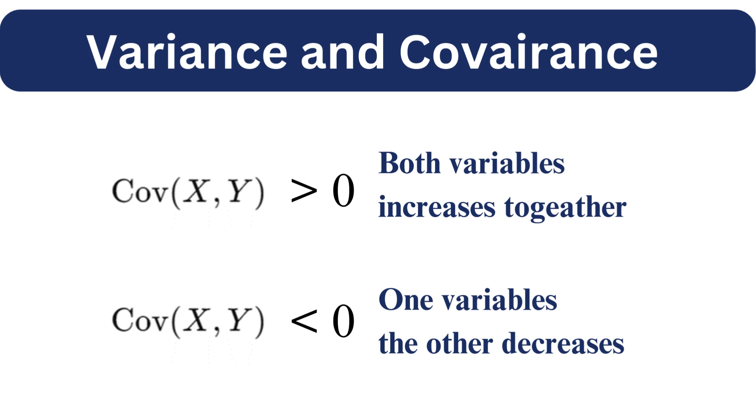A positive covariance means that as one variable increases, the other tends to increase as well. A negative covariance indicates that when one variable increases, the other tends to decrease.